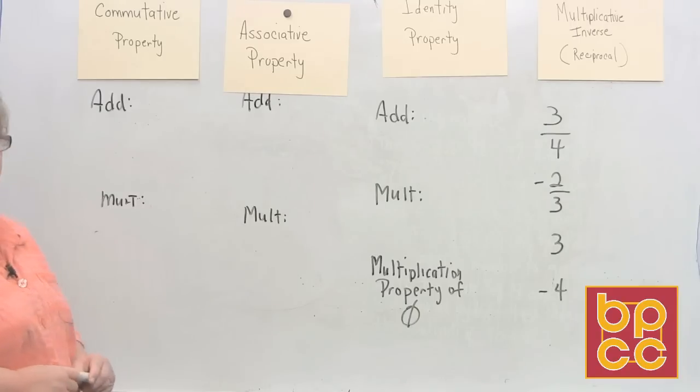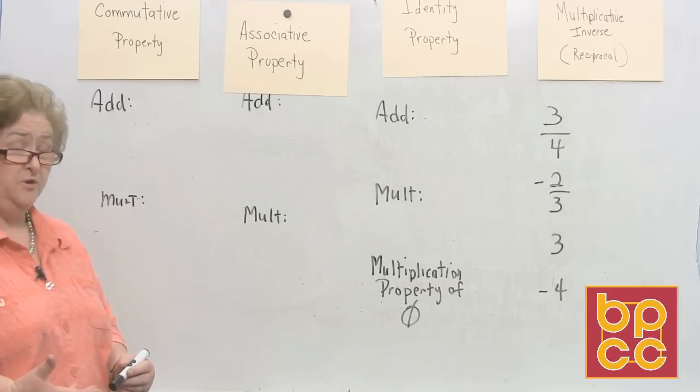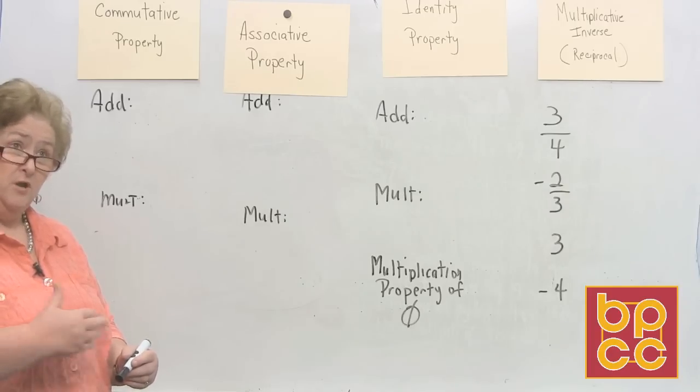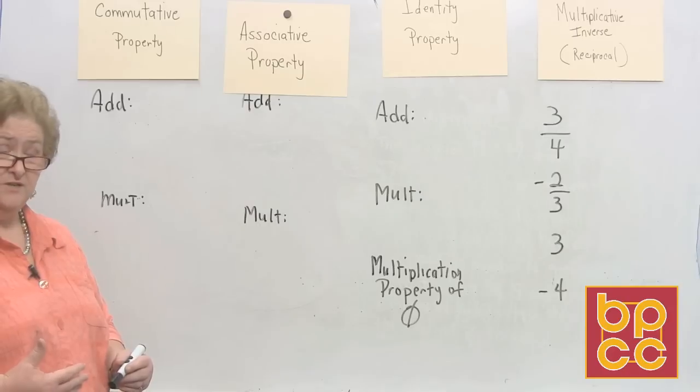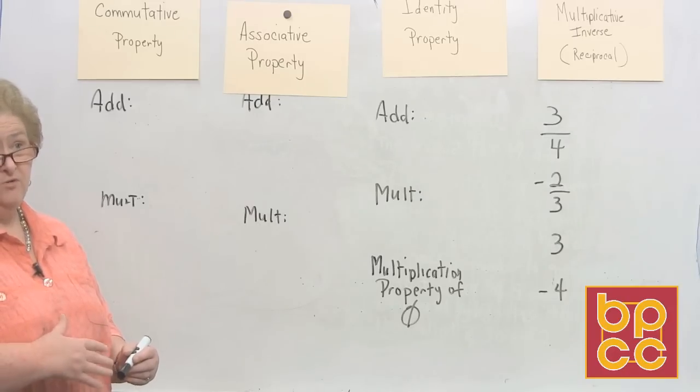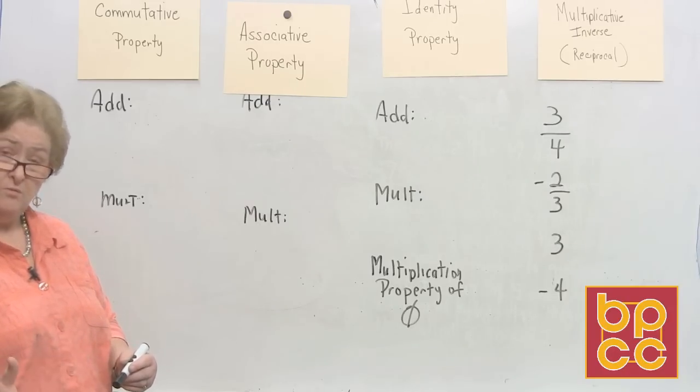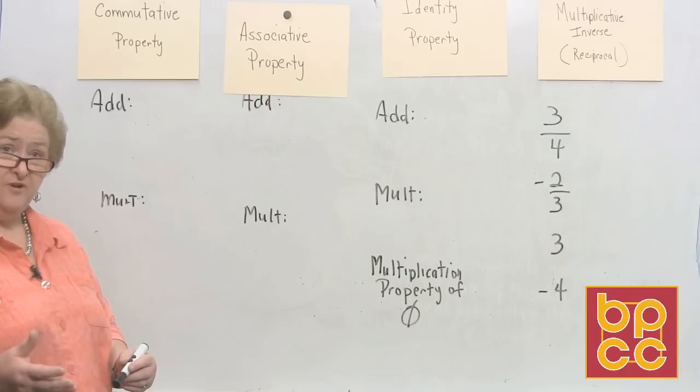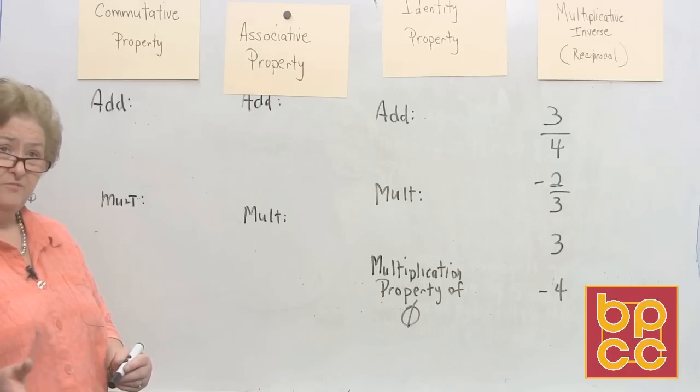The commutative property - commutative I think comes from the word commute, and commute means to go to and from someplace. Example, in the morning you go from home to school, and then you reverse it or flip it and go from school back to home. Commute from one place to another.